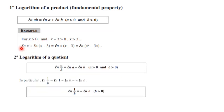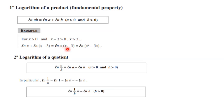Now the logarithm of a quotient: ln(a/b) = ln(a) − ln(b), where a and b are positive values. In particular, ln(1/b) = ln(1) − ln(b) = −ln(b), because ln(1) is 0. Those are the two important properties for ln: the logarithm of a product and the logarithm of a quotient.